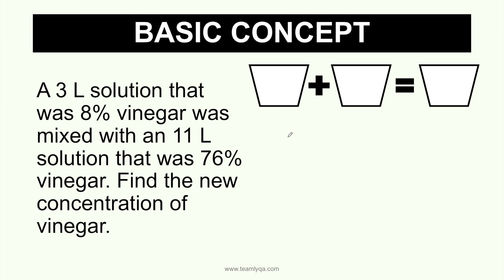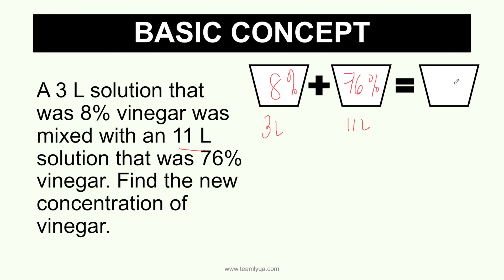I'll give you a quick sample so you can differentiate. The formula goes like this — we put the information here, and I prefer putting the percentage inside. So in this case, we're mixing 3 liters of 8% vinegar with an 11-liter solution of 76% vinegar. What we're looking for is the new concentration of the vinegar, so we put x here. We have 3 liters plus 11 liters, that's 14 liters total.